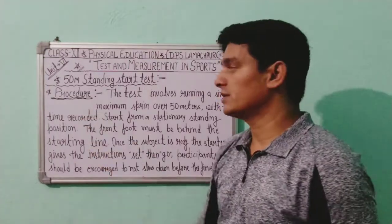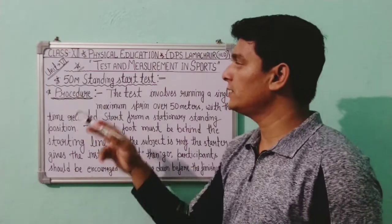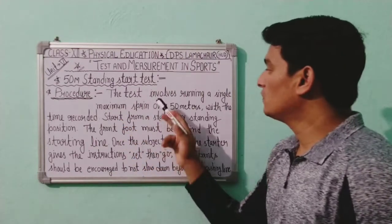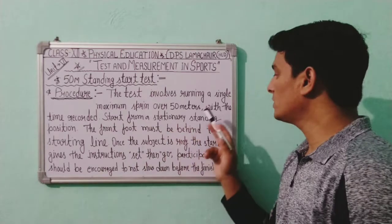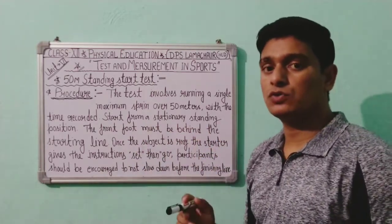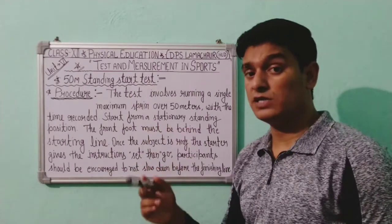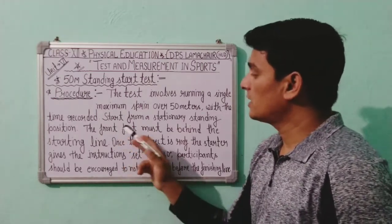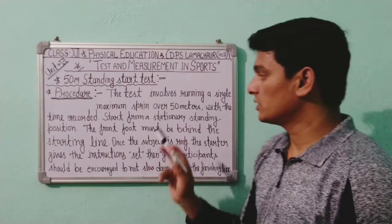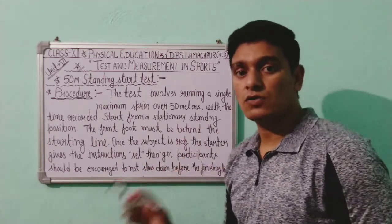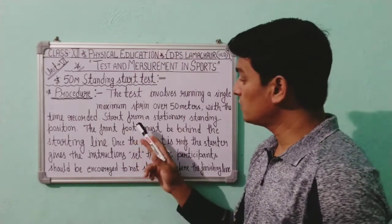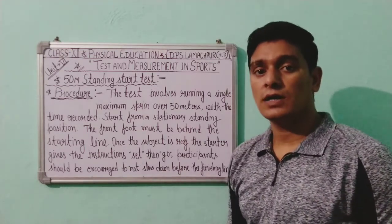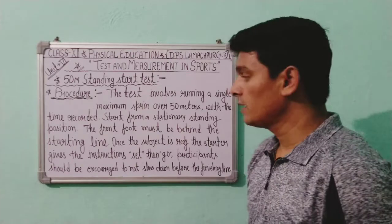The procedure for the 50 Meter Standing Start Test involves running a single maximum sprint over 50 meters with the time recorded. The start is from a stationary standing position — hands cannot touch the ground. One leg should be in front and one in the back; the front foot must be behind the starting line.